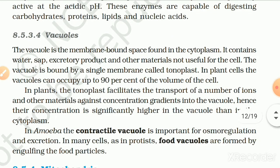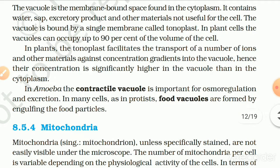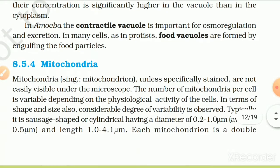8.5.3.4 Vacuoles. The vacuole is the membrane-bound space found in the cytoplasm. It contains water, sap, excretory products, and other materials not useful for the cell. The vacuole is bound by a single membrane called the tonoplast. In plant cells, the vacuole can occupy up to 90% of the volume of a cell. The tonoplast facilitates the transport of ions and other materials against the concentration gradient into the vacuole. In Amoeba, the contractile vacuole is important for osmoregulation and excretion. In many cells, such as protists, food vacuoles are formed by engulfing food particles.